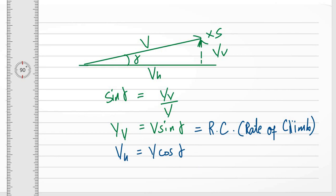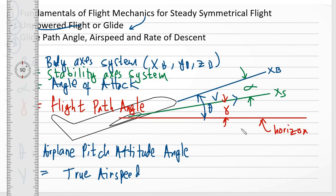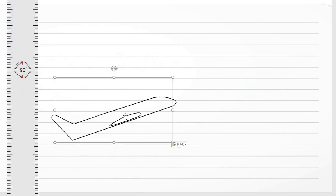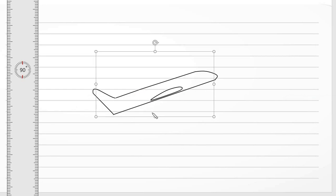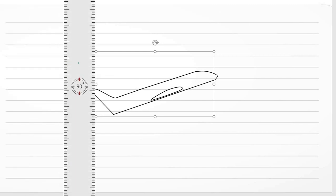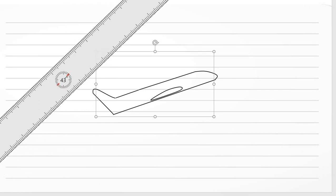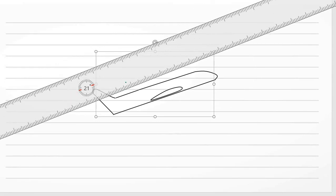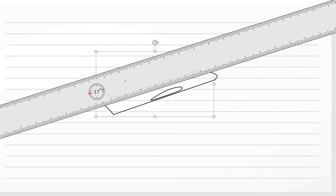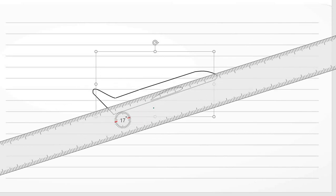We are done with defining the velocity and the angles for our aerodynamic nomenclature. Now we will go to the forces — the forces acting on an aircraft. We are very familiar with those: lift, drag, weight, and thrust. Lift and drag would be found along the X sub S, or the stability axis system.